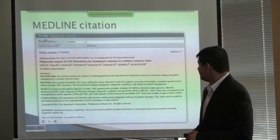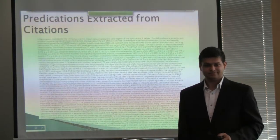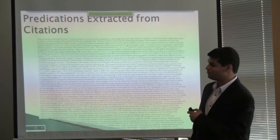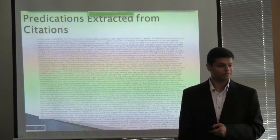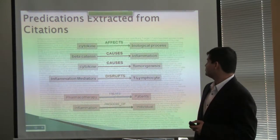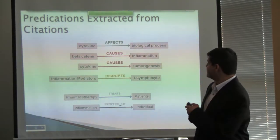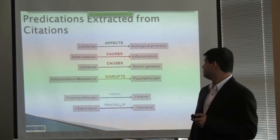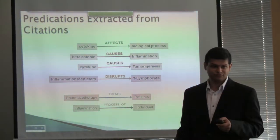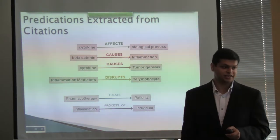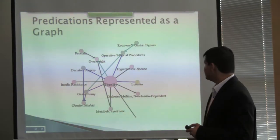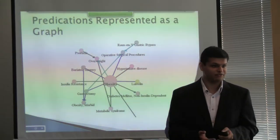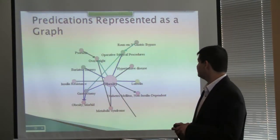Here is an example of a Medline citation. From that text, if we run the SemREP program, we can extract these predications, where cytokine and biological process are the arguments, and 'effects', which is the relationship, forms the predicate. Once we have that, we can actually try and convert it into a graph form or at least try to visualize it in the form of a graph.